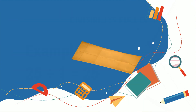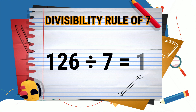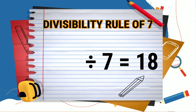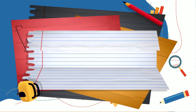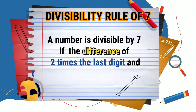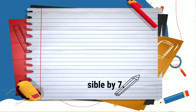Now let's divide: 42 divided by seven is equal to six. The quotient has no remainder, therefore 126 is divisible by seven. Let's check: 126 divided by seven is equal to 18, and there is also no remainder. There's another way to find if the number is divisible by seven: first, we need to multiply the last digit of the number by two, then subtract its product from the remaining digits.